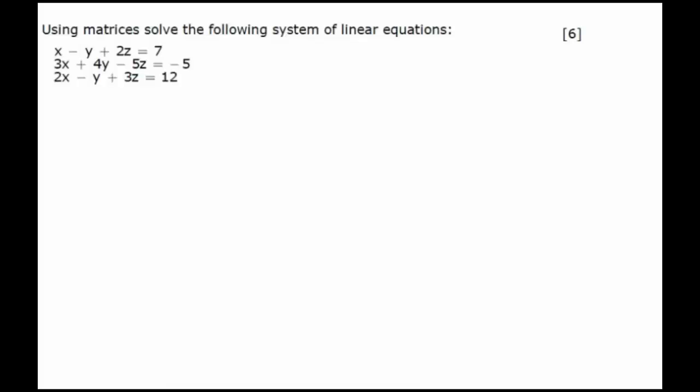Hello students, in this question we are given three equations: x minus y plus 2z equals 7, 3x plus 4y minus 5z equals minus 5, and 2x minus y plus 3z equals 12. We have to solve this system of linear equations using matrices.